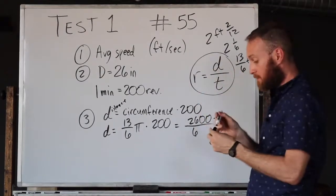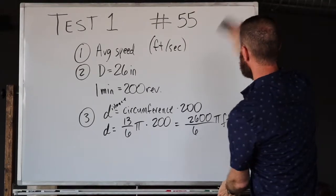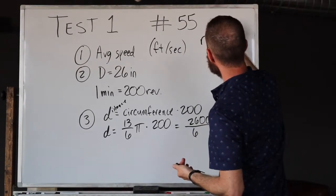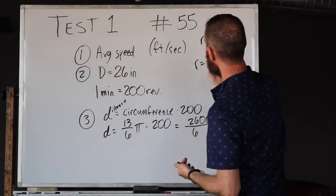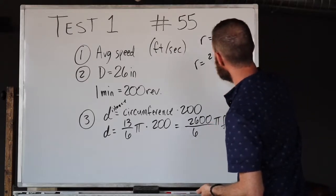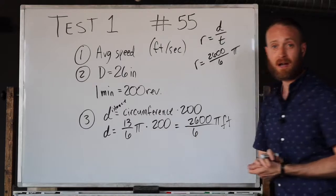We're going to come back up here and check where we are in this problem. We know we've got this equation r = d/t. We now have our d, we have our distance - it's 2600/6 times π. That's our d. This whole thing needs to be divided by t, time.